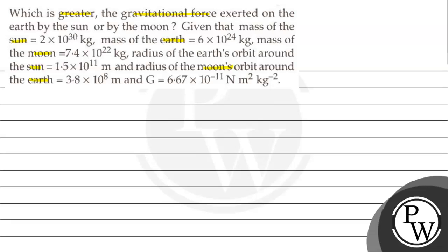We have to calculate which is greater: the gravitational force on the earth by the sun, or the earth by the moon. The key concept of this question is gravitational force. The gravitational force formula involves G multiplied by the mass of one object times the mass of the second object, divided by r squared.